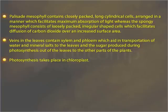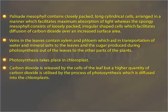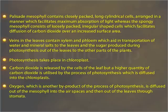Photosynthesis takes place in the chloroplasts. Carbon dioxide is released by the cells of the leaf, but a higher quantity of carbon dioxide is utilized by the process of photosynthesis, which is diffused into the chloroplasts. Oxygen, which is another byproduct of photosynthesis, is diffused out of the mesophyll into the air spaces and then out of the leaves through stomata.